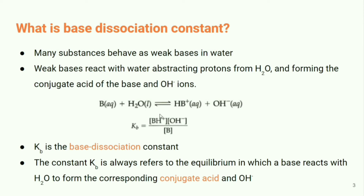Here, BH⁺ is the concentration of the conjugate acid of the base. This is the concentration of OH⁻ ions, i.e., the simple hydroxide ions. Kb is the base dissociation constant. Kb always refers to the equilibrium in which a base reacts with H₂O to form the corresponding conjugate acid and OH⁻.